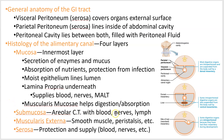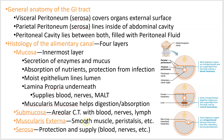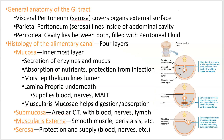The submucosa lies beneath the mucosa and has a thick connective tissue layer with lots of blood vessels. The muscularis externa has two smooth muscle layers: a circular layer on the inside and a longitudinal layer on the outside. Contracting the circular muscles makes the tube narrower; contracting the longitudinal muscles makes the tube shorter and fatter. This lets you really mush food around in your gut while you digest it.